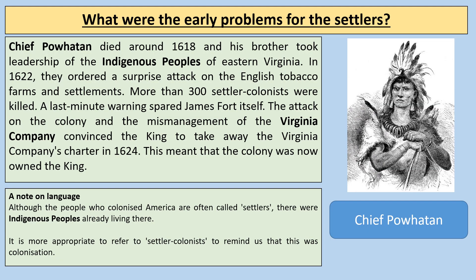Disease, famine, and attacks from the neighbouring Powhatan tribe made life very difficult for the settlers. Chief Powhatan died around 1618, and his brother took leadership of the indigenous peoples of eastern Virginia. In 1622, they ordered a surprise attack on the English tobacco farms and settlements — more than 300 settler colonists were killed. A last-minute warning spared James Fort itself. The attack and the mismanagement of the Virginia Company convinced the king to take away the Virginia Company's charter in 1624, meaning the colony was now owned by the king. It's important to remember that although those who colonised America are often called settlers, indigenous peoples were already living there, so settler colonists is the more appropriate term.